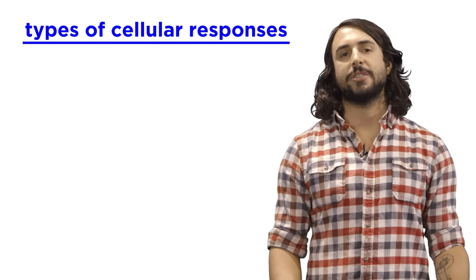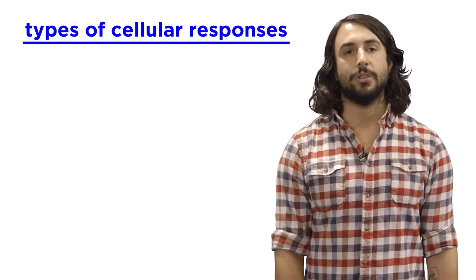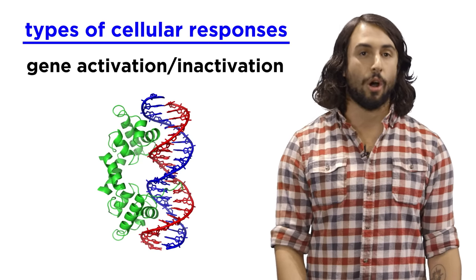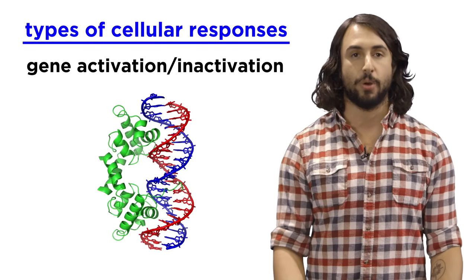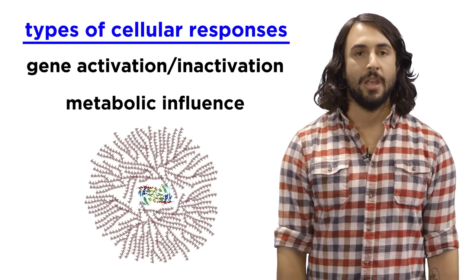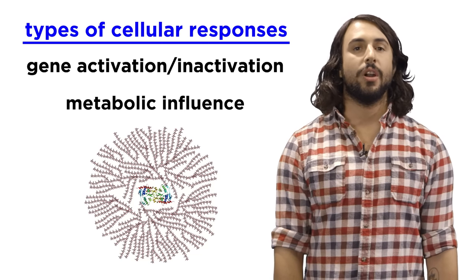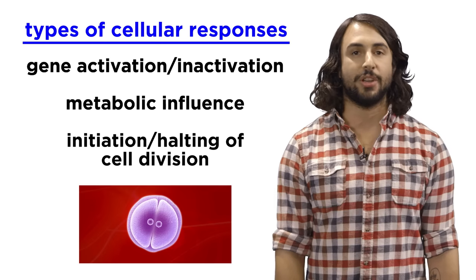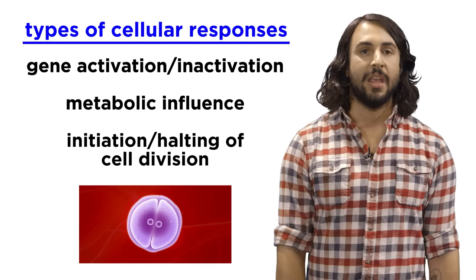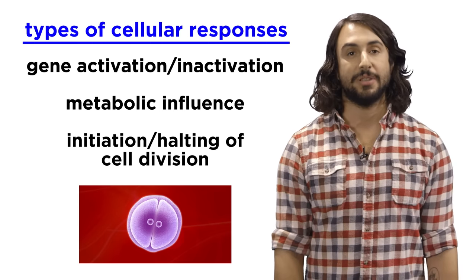So what are these cellular responses that are triggered by messenger molecules? The signal might result in a gene getting turned on or off, which is often to stimulate or halt the production of a particular protein. Other times, a signal may cause a change in metabolism by activating the enzyme that breaks down stored glycogen. Or the signal might regulate cell division, which is why malfunctions in these pathways can cause tumor growth, if the signal to stop cell division is not being received due to a faulty receptor.